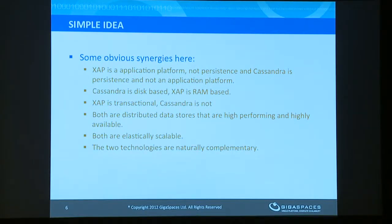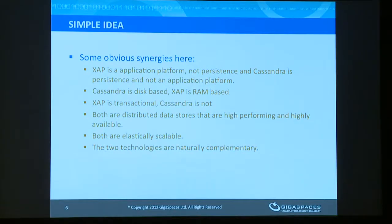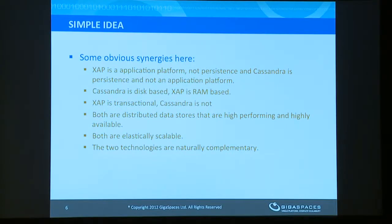Some key differences: XAP is actually an application platform, storing everything from the web tier all the way through to data. XAP is transactional; Cassandra is not. They're both distributed and both elastically scalable. They're natural complements, and one of the nice things is that the combination provides a bridge for applications that can't tolerate any level of inconsistency, simply by accessing Cassandra through XAP.